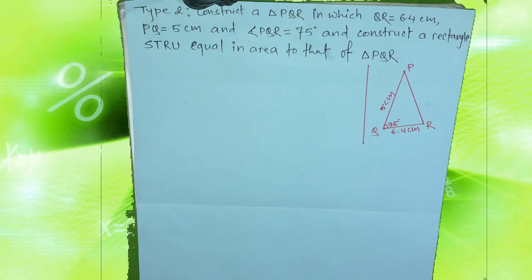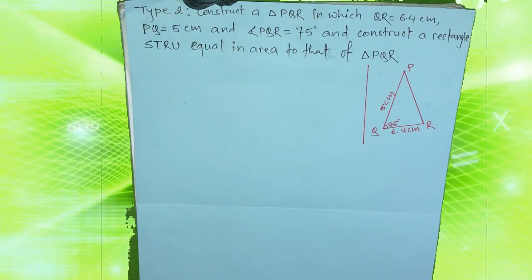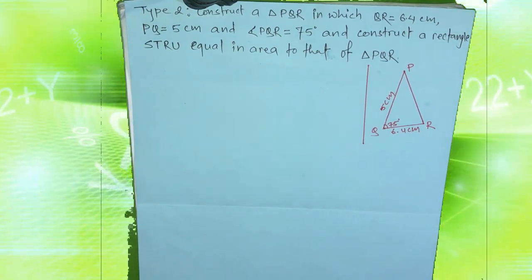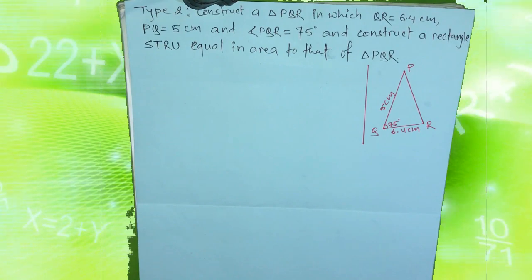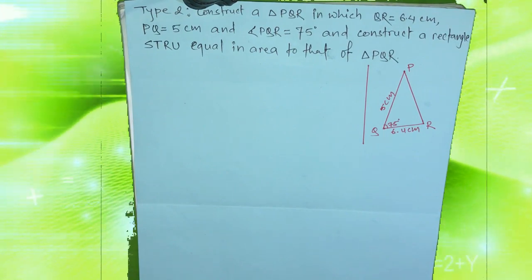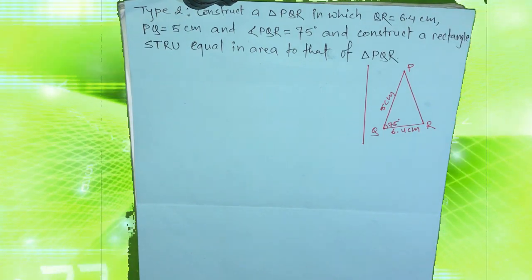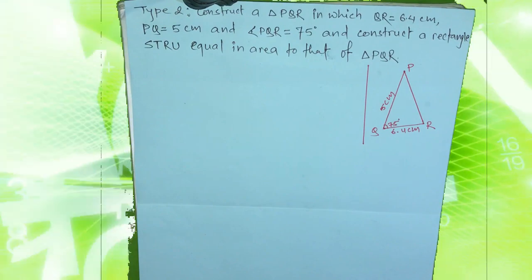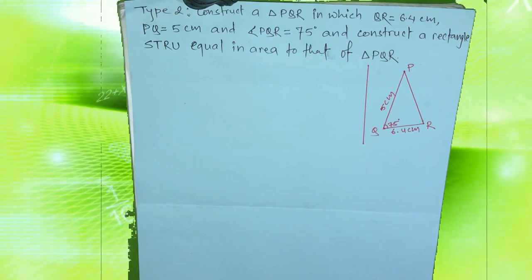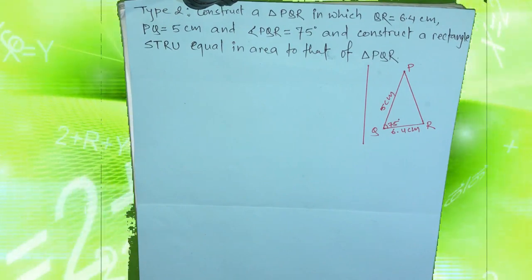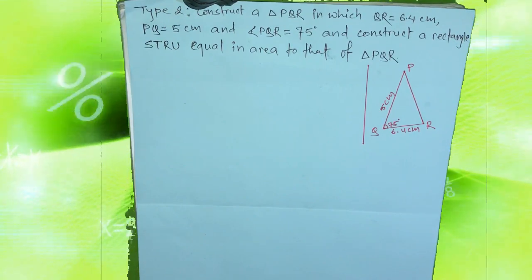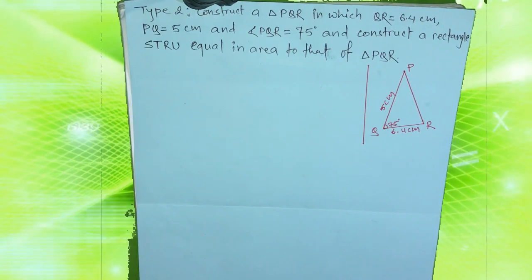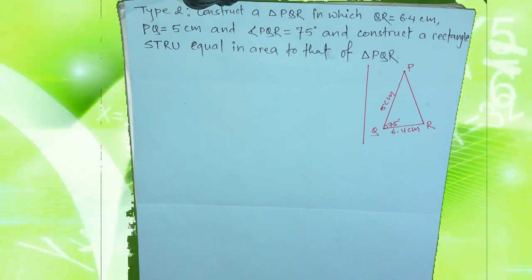Hello, Namaskar. Welcome to the new video. In this video we will cover construction type 2 questions. In type 1, a quadrilateral equals a triangle construction. In type 2, a triangle is equal to a rectangle draw.